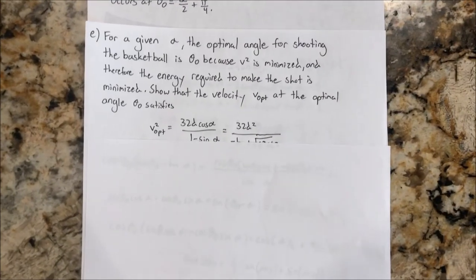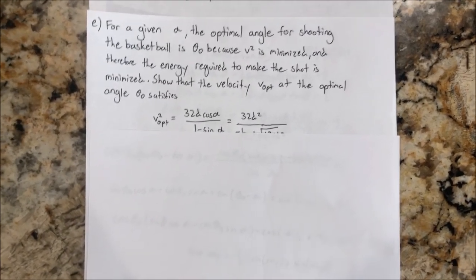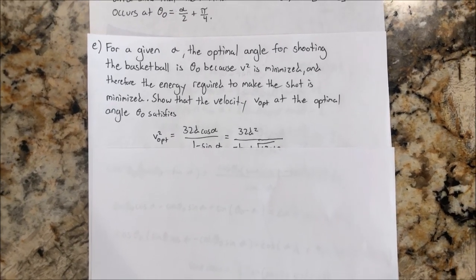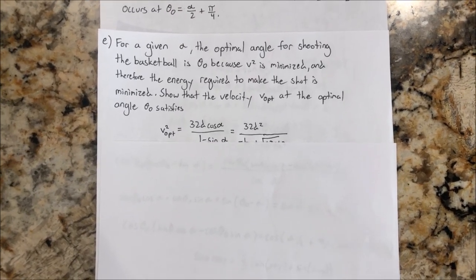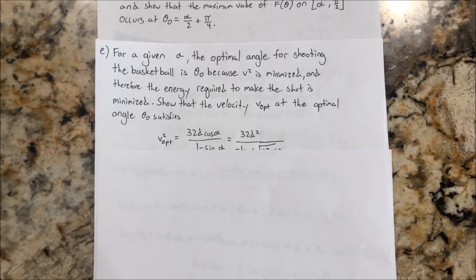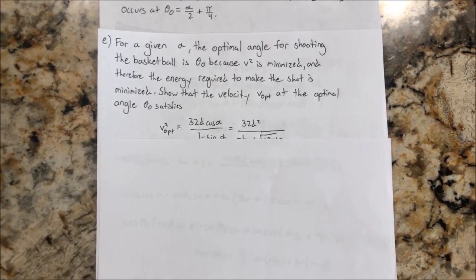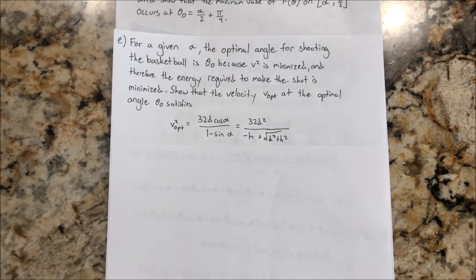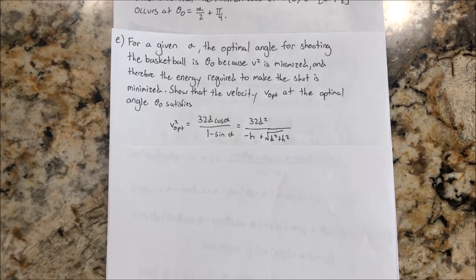So in part E, for a given alpha, the optimal angle for shooting the basketball is theta 0 because v squared is minimized and therefore the energy required to make the shot is minimized. So that the velocity at the optimal angle theta 0 satisfies v squared optimal is equal to 32d cosine alpha 1 minus sine alpha.